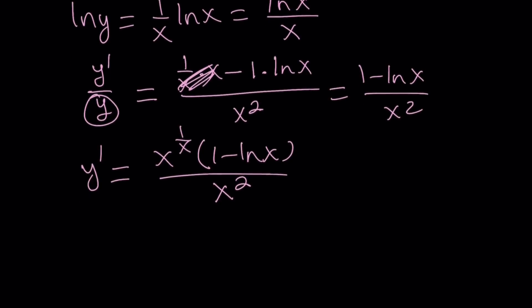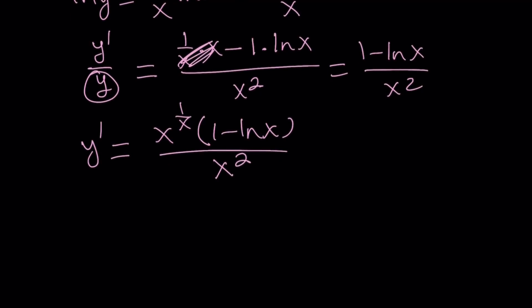Times 1 minus ln x divided by x squared. Awesome. Now, a lot of times when we take the derivative of a function, because we're trying to understand the behavior of the function, where does it increase, where does it decrease, does it have any maxima or minima, any inflection points, is it always increasing, so on and so forth. So set the derivative equal to 0, that's going to answer a lot of questions.